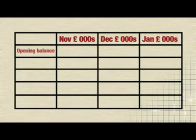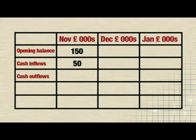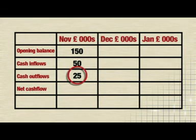We'll put the opening balance here for November — this is how much cash they start off with. Let's say it's £150,000. Then the cash inflows, which can also be called receipts — these are £50,000. Next are the outflows, which can also be called payments or expenditure, and is what the money is being used on — for example, raw materials or loan repayments. For November, the outflows are £25,000. The next thing to do is work out the net cash flow, which means taking the outflows away from the inflows. In this example, the firm plans to have fewer outflows than inflows, so is left with a positive figure. See how £25,000 has been taken away from £50,000 to give £25,000.